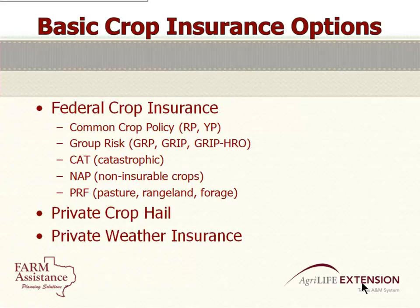You've got your federal crop insurance, which is the common crop policy — the RP and YP — which is what used to be CRC and APH. Then of course you have group plans, CAT, NAP for the non-insured, and PRF for pastures. You can actually buy both NAP and PRF on the same acres if you wanted to. Then of course we have private crop hail and something kind of new is private weather insurance.